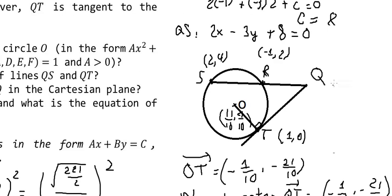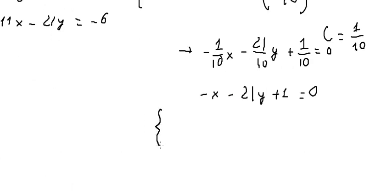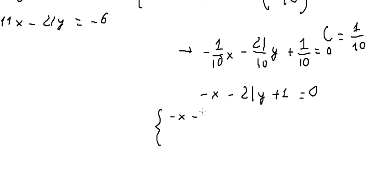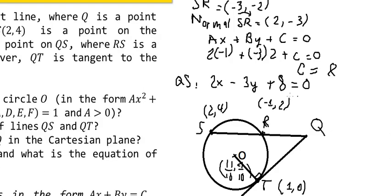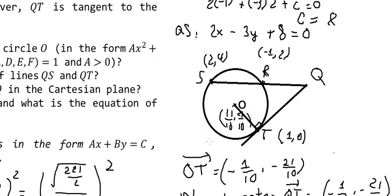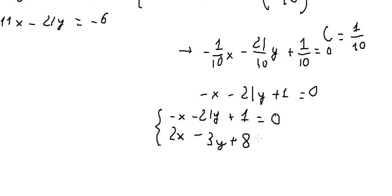Now to find point Q, we create a system of equations using line QS and line QT: 2x - 3y + 8 = 0 and x + 21y - 1 = 0. Solving the intersection of the two lines, we find Q at (-11/3, 2/9).